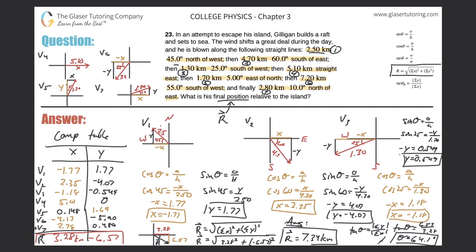The angle is measured off the east axis and is directed south of east. So the final answer: the resultant vector is 7.34 kilometers at 64.1° south of east.